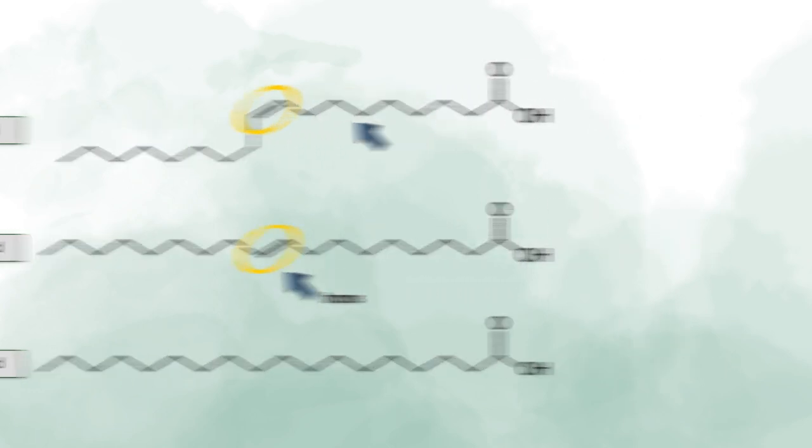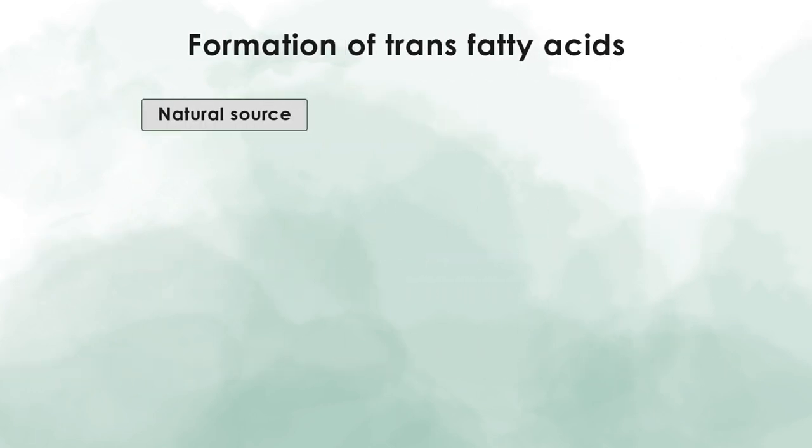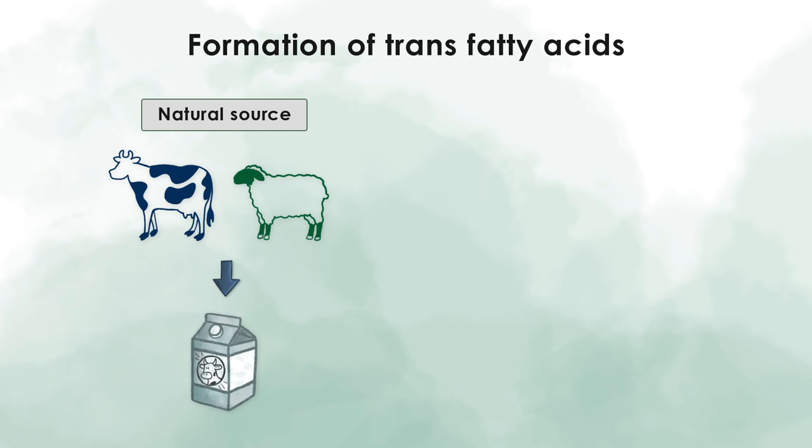Trans fatty acids naturally occur in fat tissue and milk fat from cows and sheep as the cis fatty acids which they consume with their feedstock is isomerized into trans fatty acids in the rumen during the digestion process and from there the trans fatty acids find their way into the milk fat and the fat tissue of the meat.